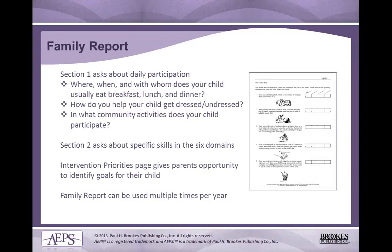The family report was developed to obtain information from parents and other caregivers about children's skills and abilities across the six curricular areas of development. Section one asks about daily participation — when, where, and with whom does your child eat breakfast, lunch, and dinner; how do you help your child get dressed or undressed; and what community activities does your child participate in? Section two asks about specific skills within those six domains. Another section identifies intervention priorities for the family, helping them set goals for their child. Just like an AAPS assessment, the family report can be used multiple times per year.